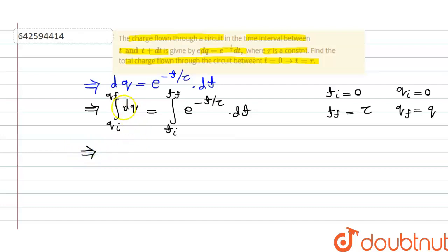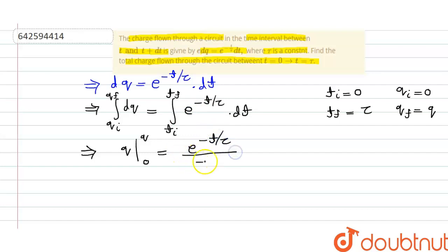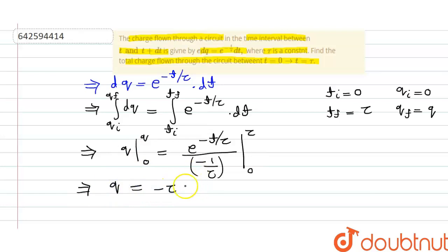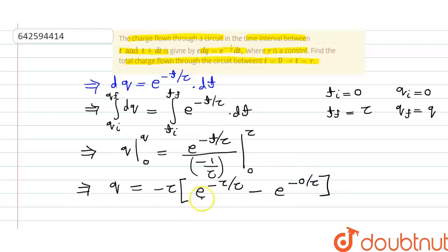Solving this integration, we get q on the left side. On the right side, the integral of e raised to minus t by tau gives e raised to minus t by tau divided by minus 1 by tau, with limits from t equals zero to t equals tau. Simplifying, we write q equals minus tau bracket e raised to minus tau divided by tau, then subtract the term with t equals zero divided by tau.